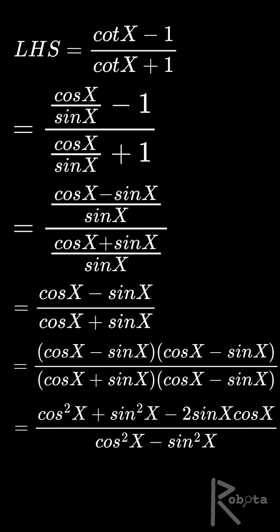The top expands to cos squared x plus sine squared x minus 2 sine x cos x. The bottom becomes cos squared x minus sine squared x.